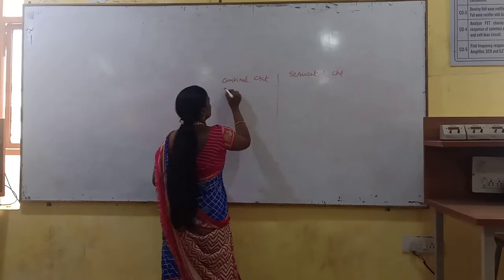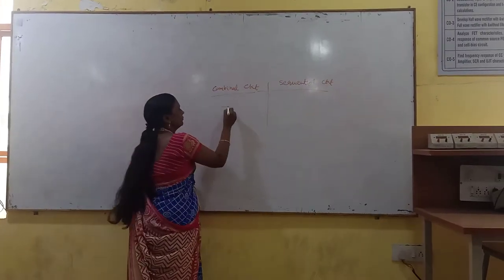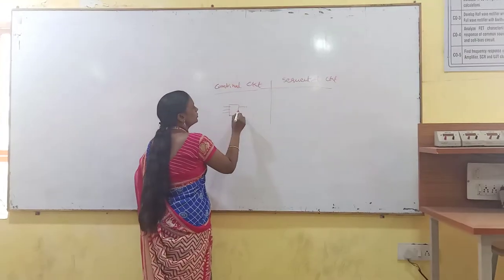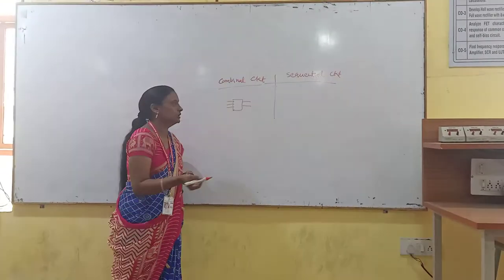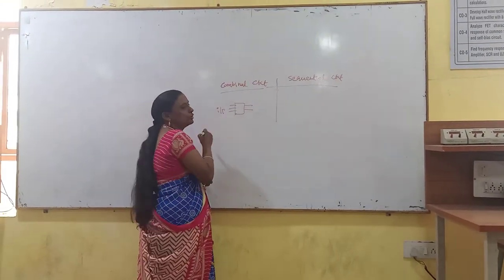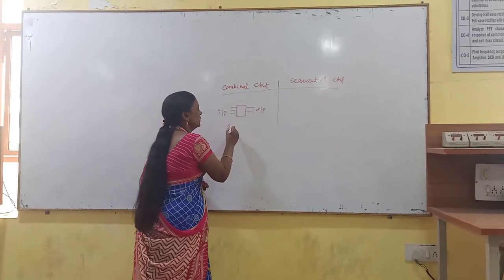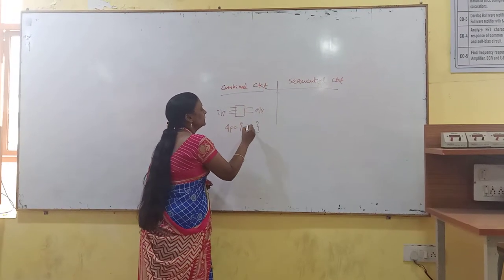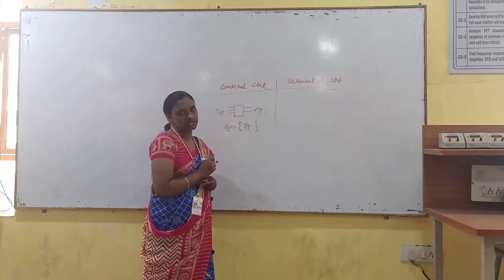In a combinational circuit, the output of any circuit depends on the present input only. The output is a function of only the inputs — that is what a combinational circuit is.